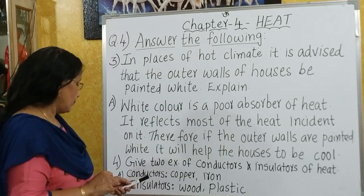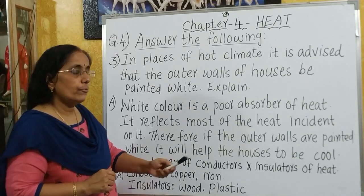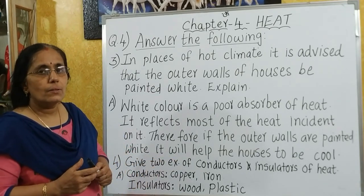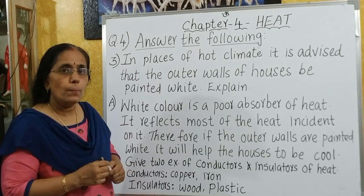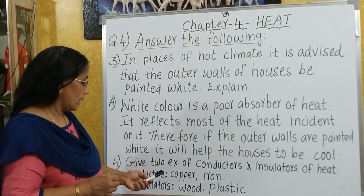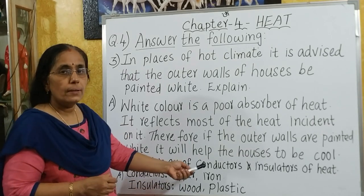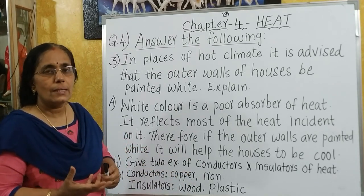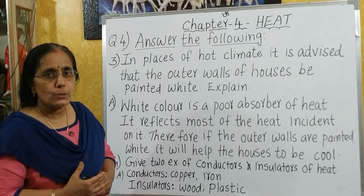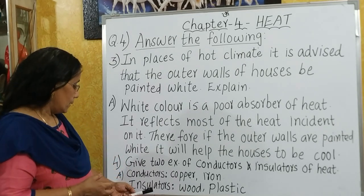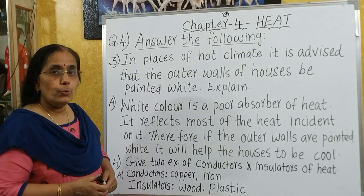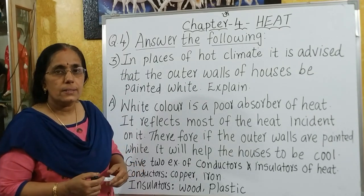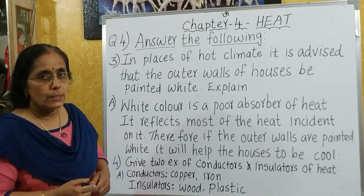The next question: give two examples of conductors and insulators. Conductors allow heat to pass through them — examples are copper and iron; generally all metals are good conductors of heat. Insulators: wood, plastic, paper, rubber — all these are examples of insulators.